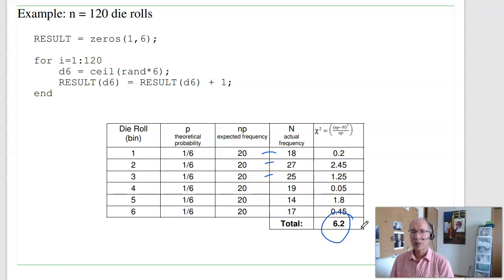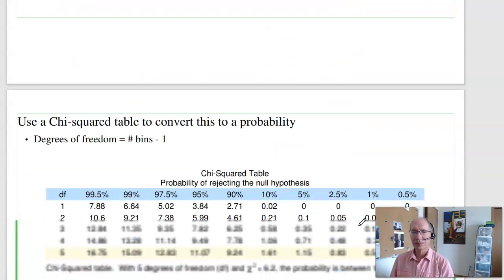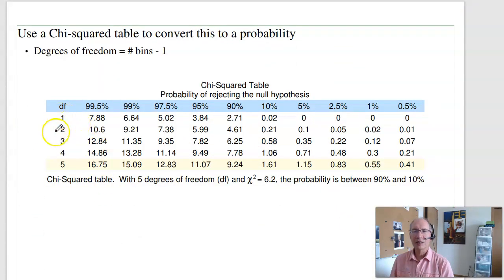Now, to convert that to a probability, I use a chi-squared table. What a chi-squared table looks like is this. I've got the degrees of freedom. This is the number of bins, minus 1. I essentially need at least two bins. Here, I've got six bins, meaning 5 degrees of freedom. My chi-squared score was 6.2. So, I look for 6.2 on the table, and it's right around here, between 10% and 90%. And that tells me the probability. So, a table is one way to look at it.